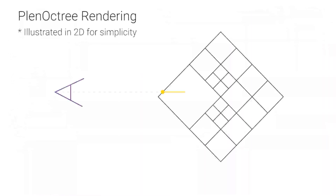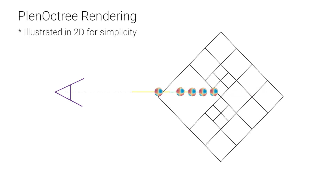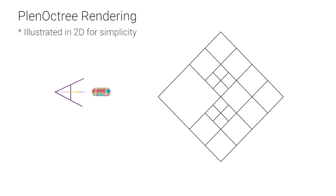Given a planar tree, we can render a ray by finding all ray-voxel intersections and applying NeRF's volume rendering formula using the lengths between leaf-voxel boundaries. The colors are obtained from evaluating the spherical harmonics stored in each voxel at the ray's direction.